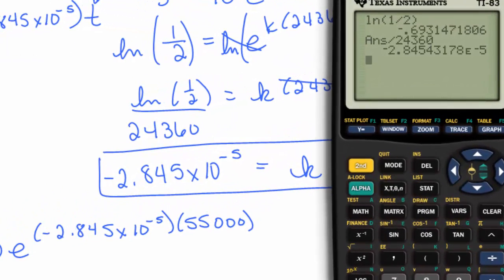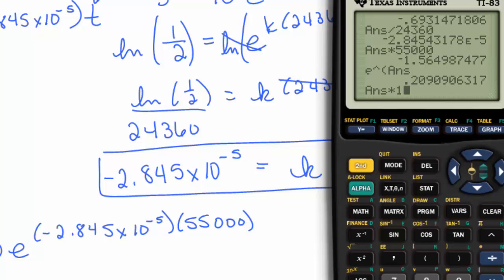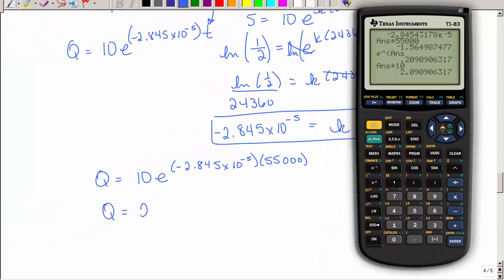So again, bringing up my calculator. This was my k value, left it in there. I'm going to multiply that times 55,000. I'm going to raise that. That's going to be my power on E. And then I multiply times 10. So my amount should be about 2.09 grams. So after 55,000 years, I started out with 10 grams and I'm left with just 2 grams.